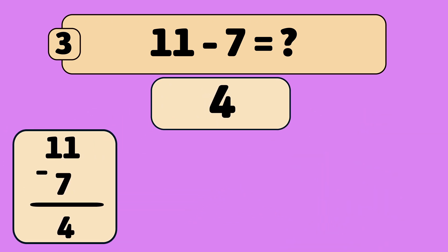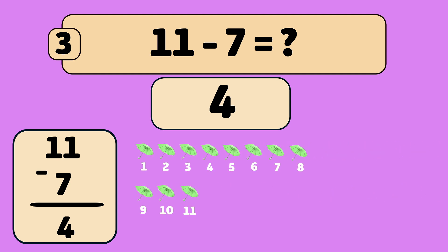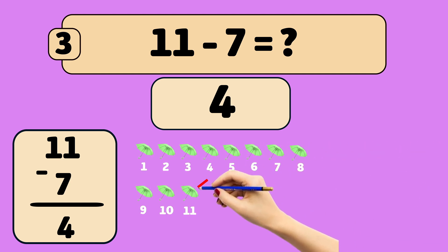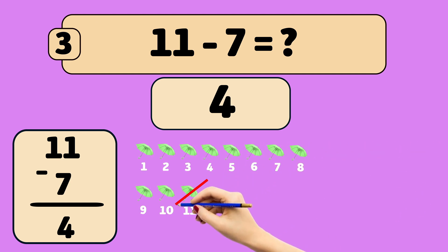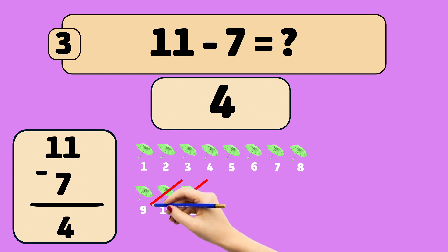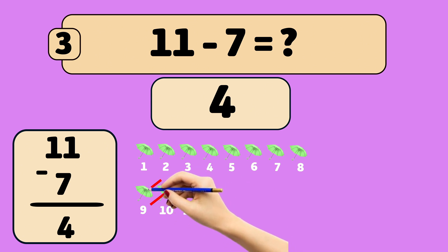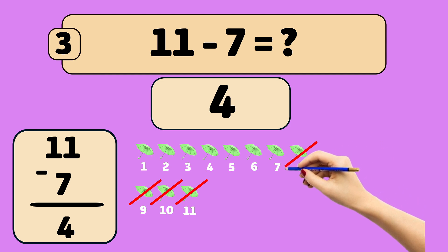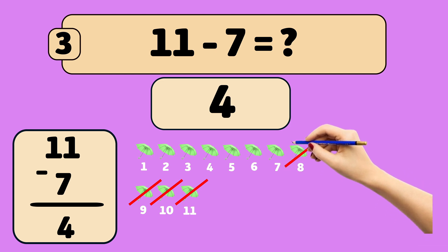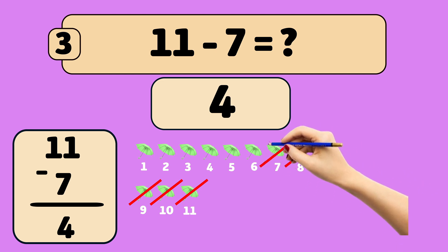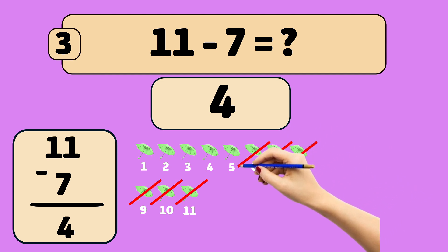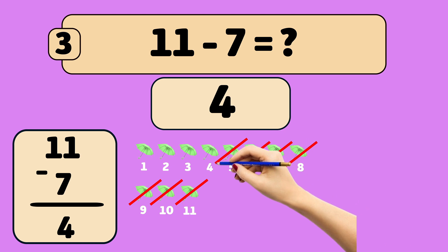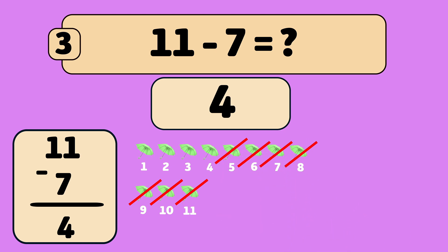What is 11 minus 7? The answer is four. We start with 11 umbrellas and remove them one by one: 11, 10, 9, 8, 7, 6, 5. Now we have four umbrellas left.